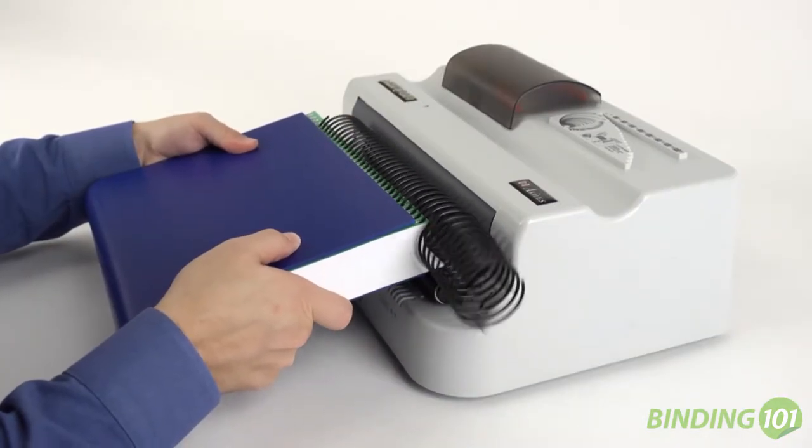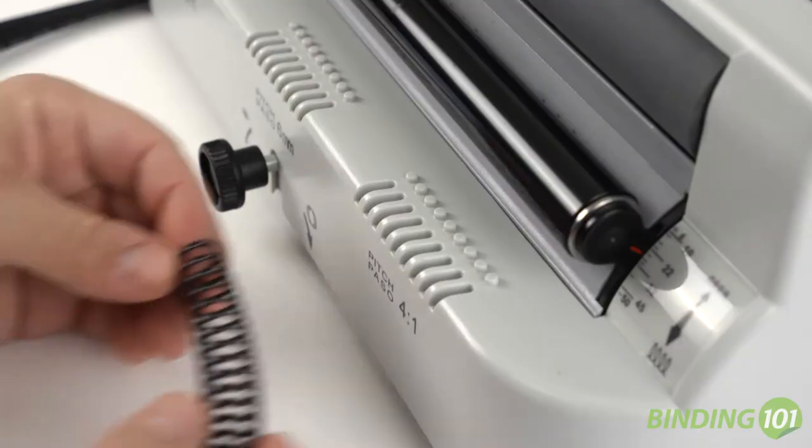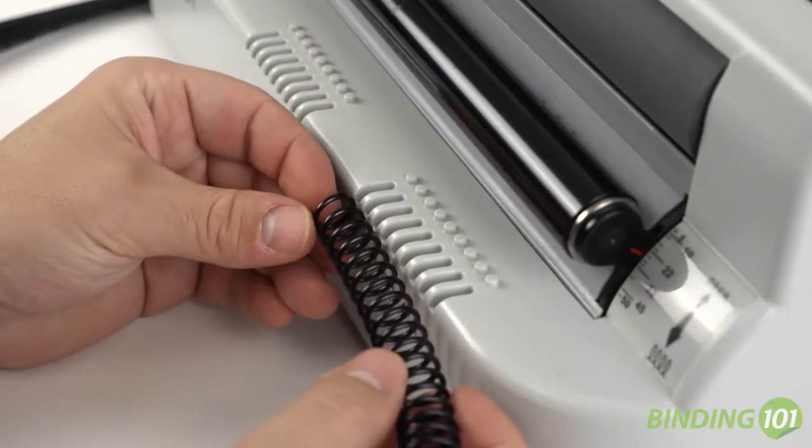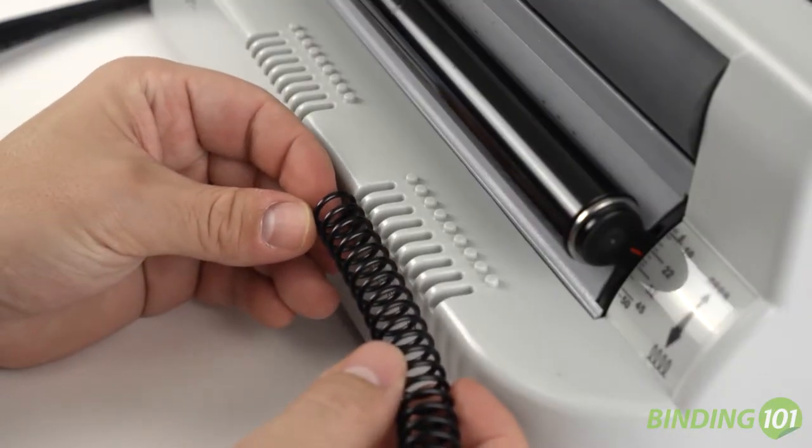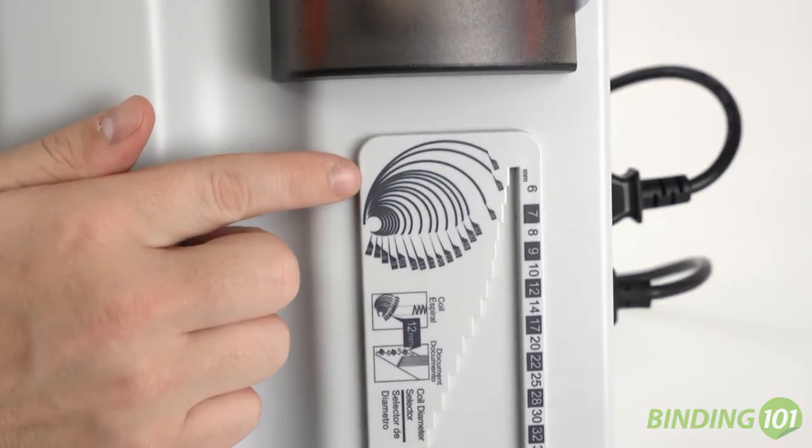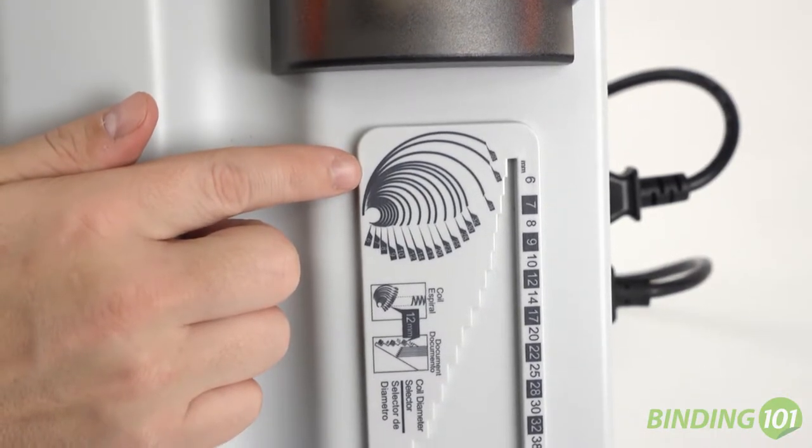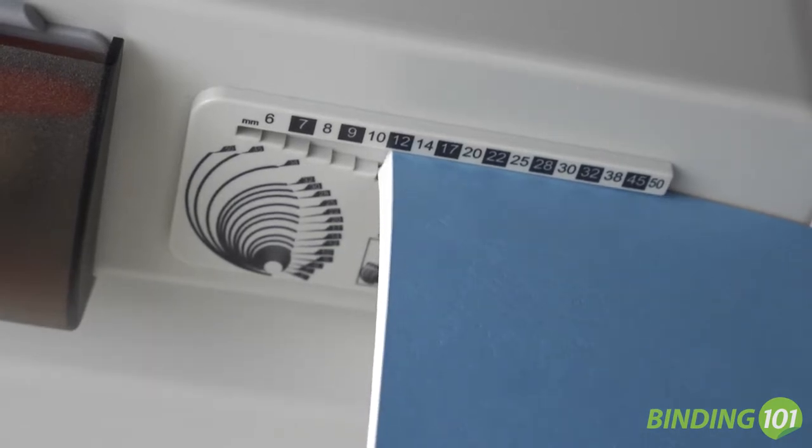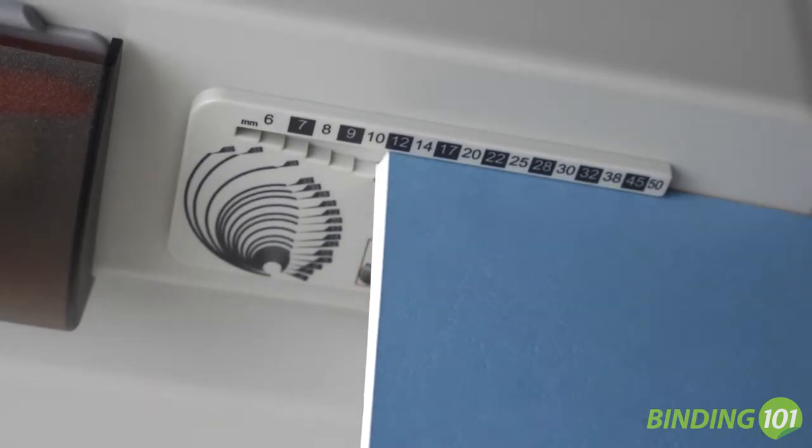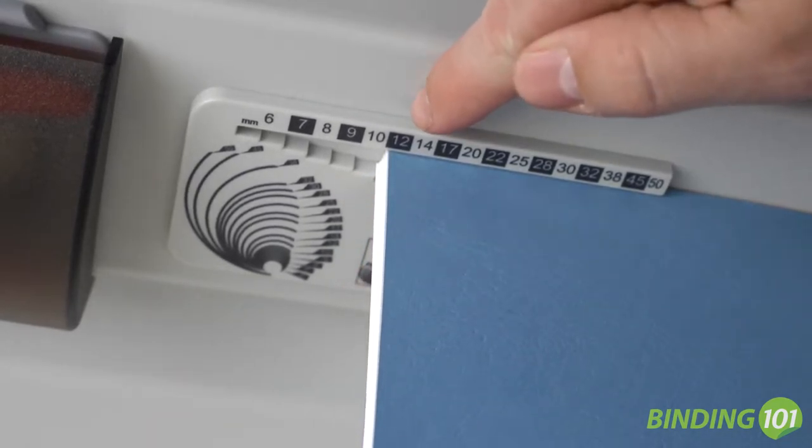Added features on the Finish a Coil M unit include a Coil Pitch Identifier to verify the coil pitch is the same as the punched document, a Diameter Scale to help verify the coil diameter, and a Diameter Selector to best select the correct coil diameter size to the thickness of your document.